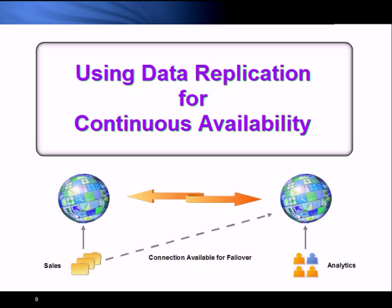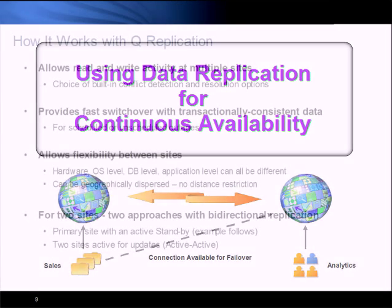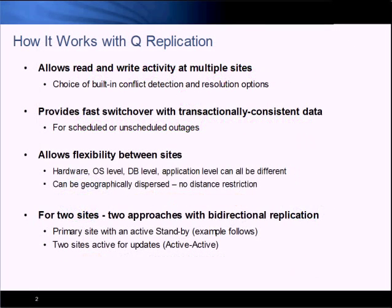In this video, we're going to take a quick look at an example of how data replication works for continuous availability. I'm going to use QReplication in this example. It has a number of features that make it especially good for availability, and we'll talk about those real quick here.